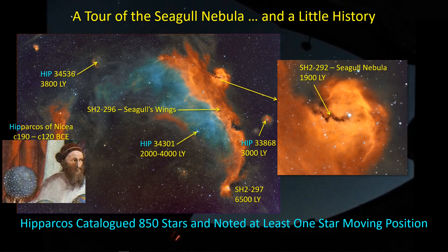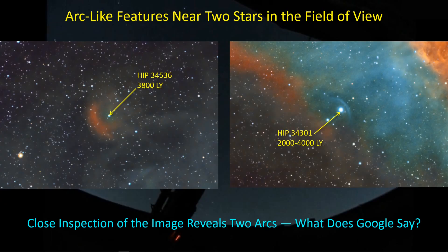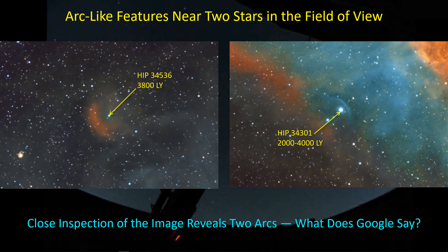That's kind of important for our story here because we're actually going to be talking about the effect of a star's motion. Here are the two stars I'm particularly interested in. When I was looking through the image, I found this one with a little arc-like feature, and identified that star as HIP 34301. Then I looked further and found another arc-like feature associated with star HIP 34536.